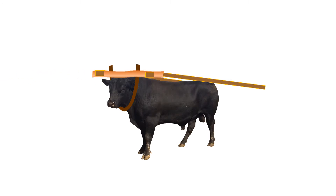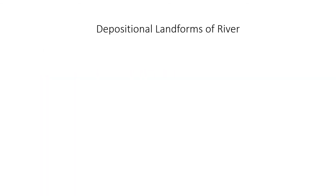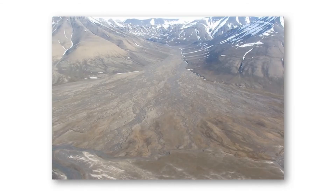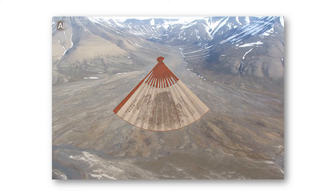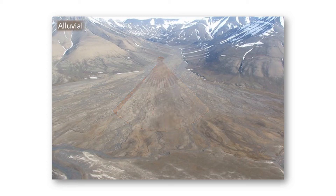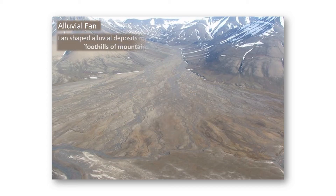Oxbow — from where do they get such a name? We saw how rivers erode the land surface. Now we will see the depositional landforms of rivers. First is the alluvial fan — a fan-shaped deposition made at the foothills of mountains.